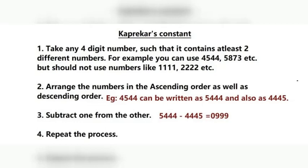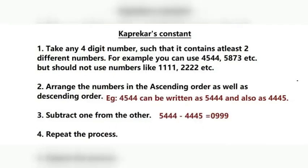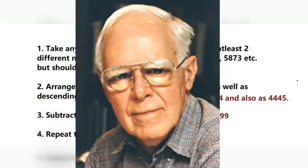Friends, today we will be seeing what is known as Kaprekar's Constant. Kaprekar's Constant was discovered by D.R. Kaprekar, an Indian from Maharashtra. He was predominantly involved in the recreational mathematics side, and his works got recognition when the world-famous puzzle enthusiast Martin Gardner published his puzzles in his works.